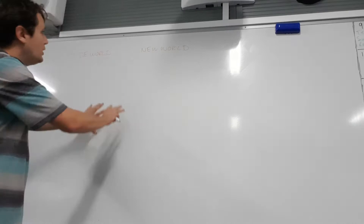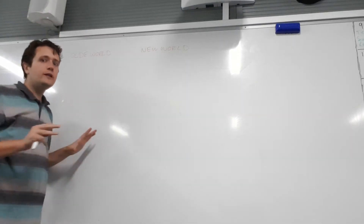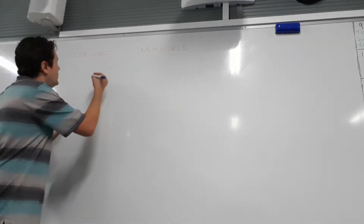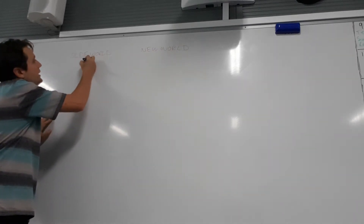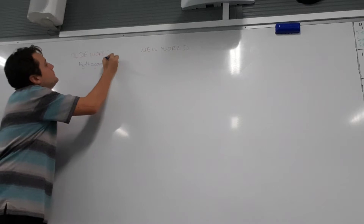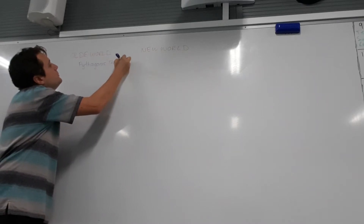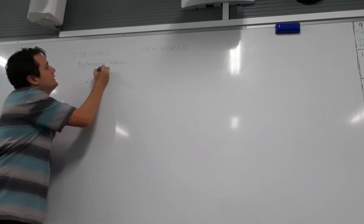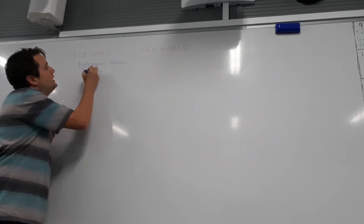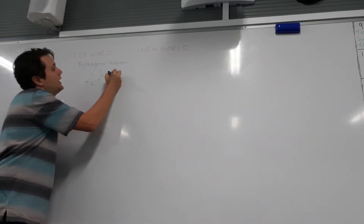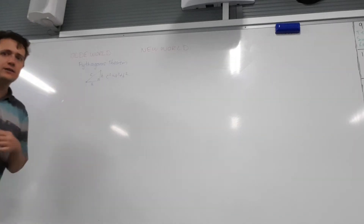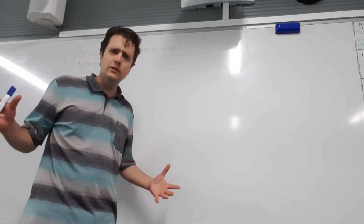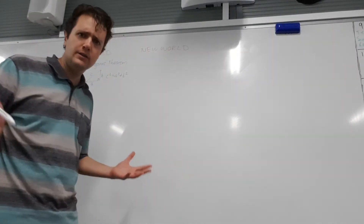In the old world, we used to deal with things that only involved right angle triangles. For example, Pythagoras' Theorem — the idea that C squared, being the hypotenuse, is equal to A squared plus B squared. We could only ever use that on right angle triangles. How frustrating is that? Life doesn't always come in right angle triangles, does it?